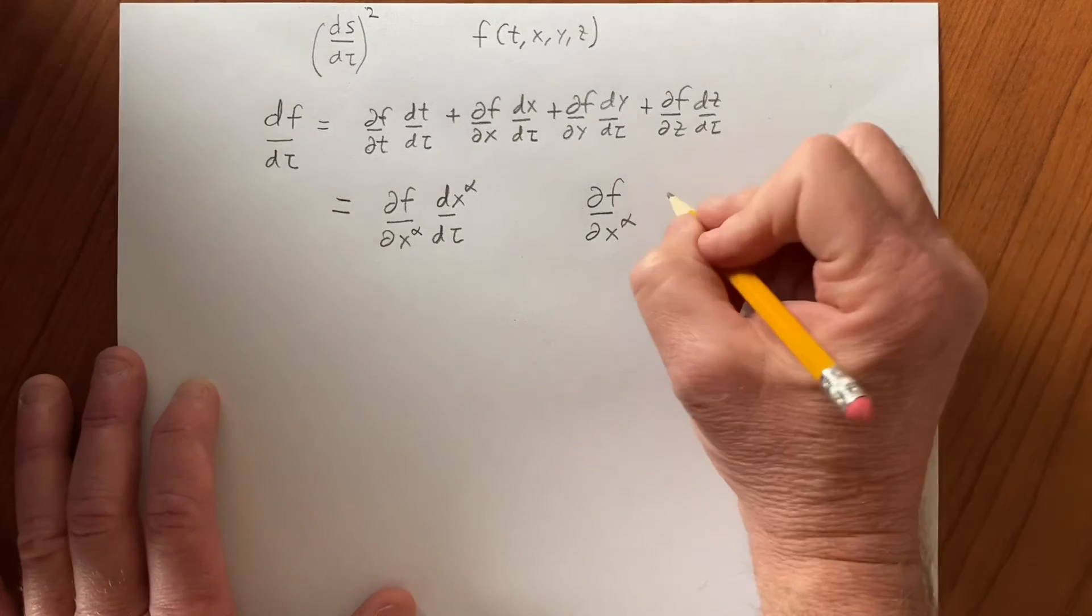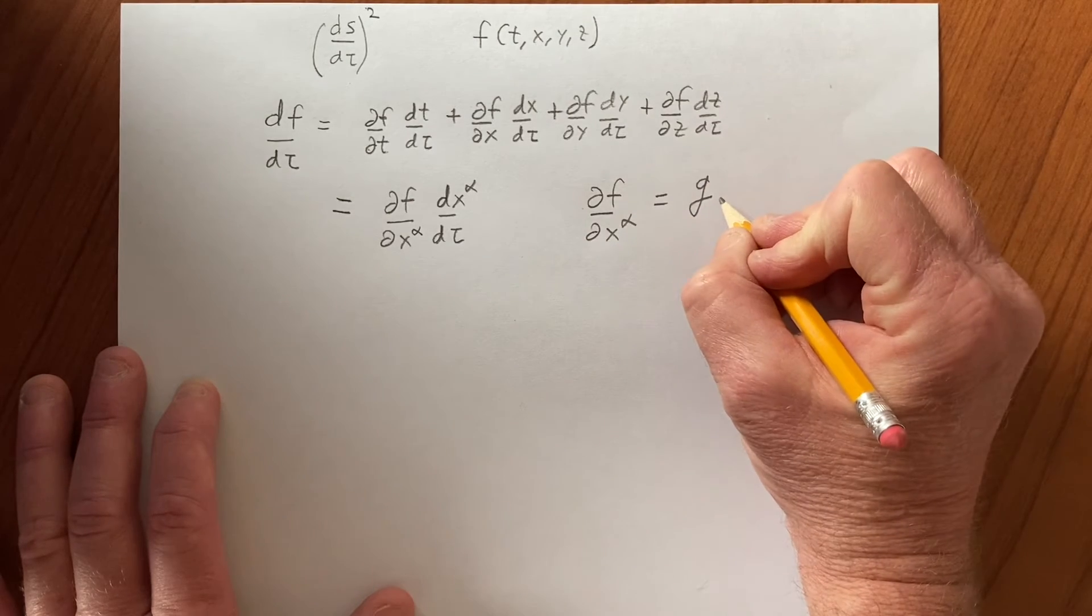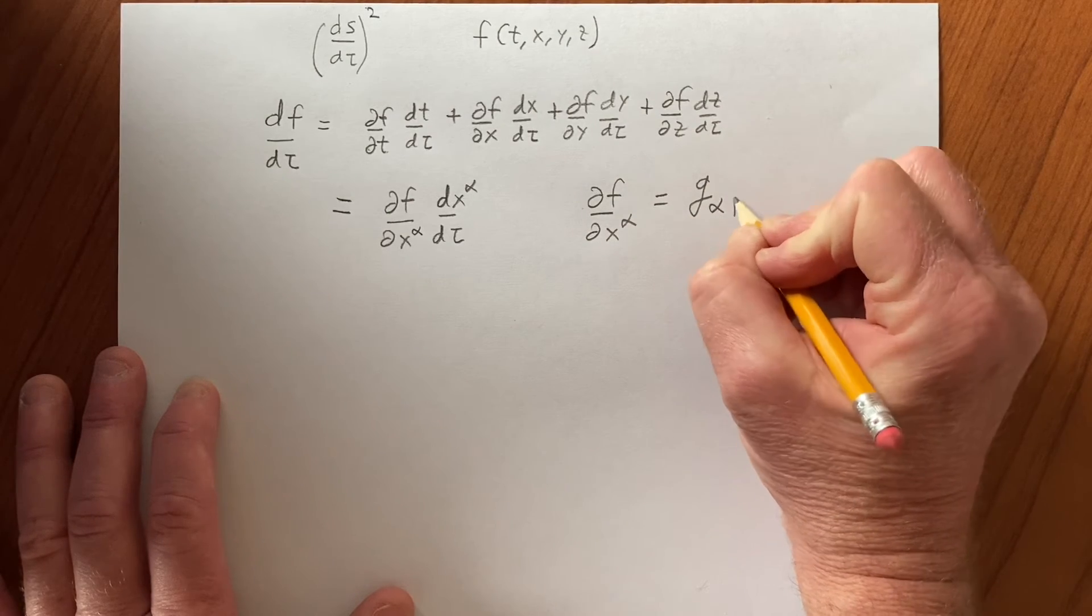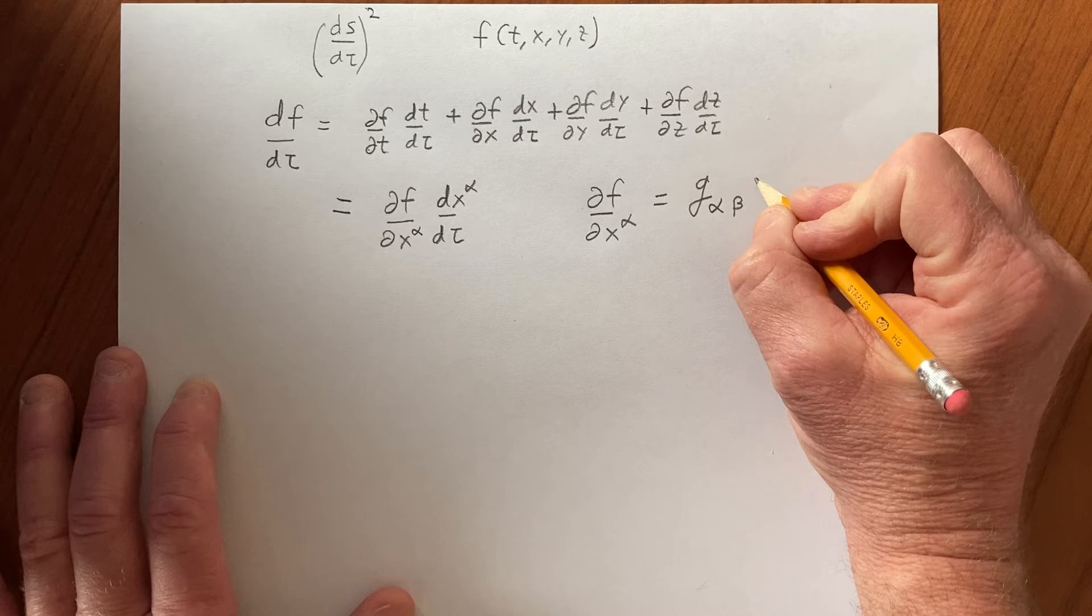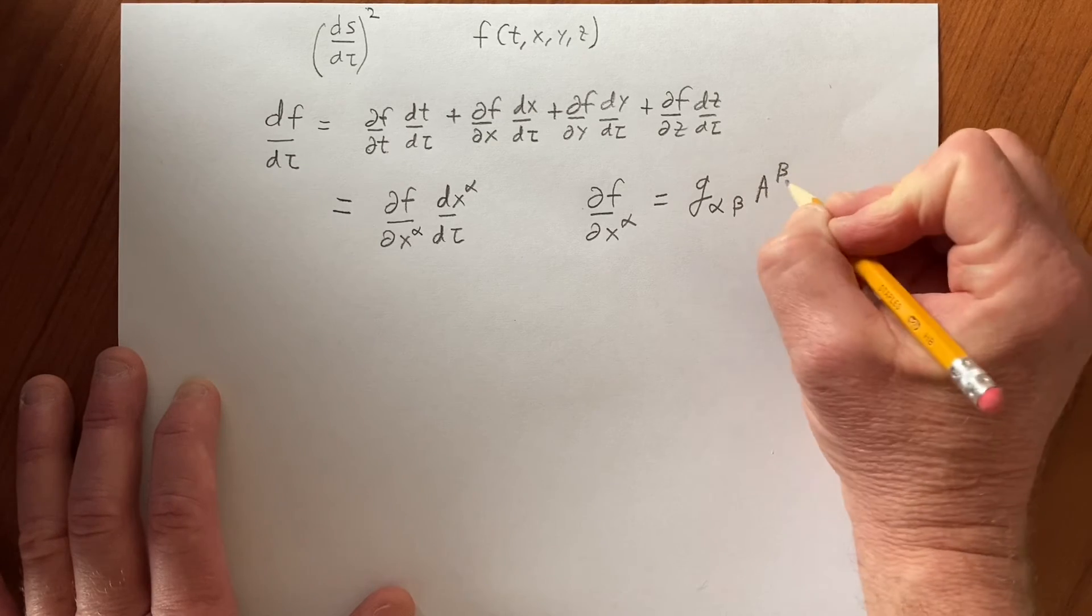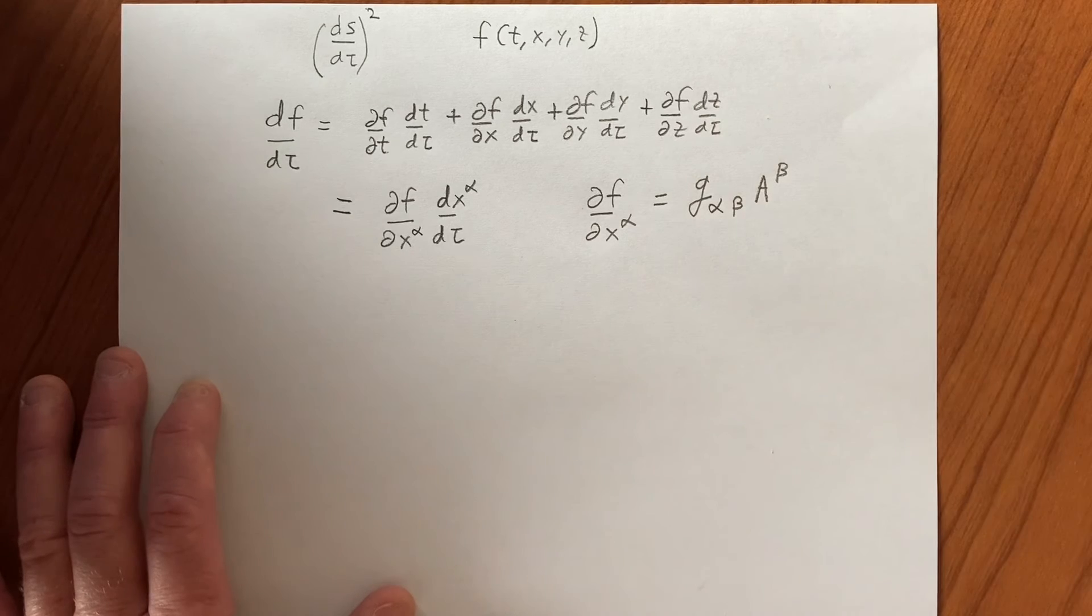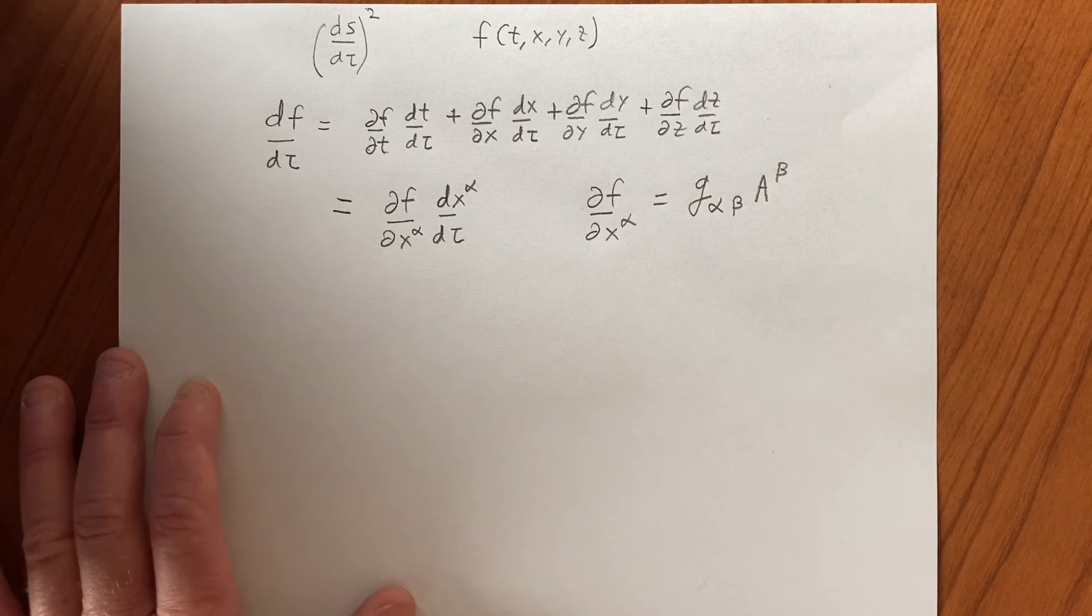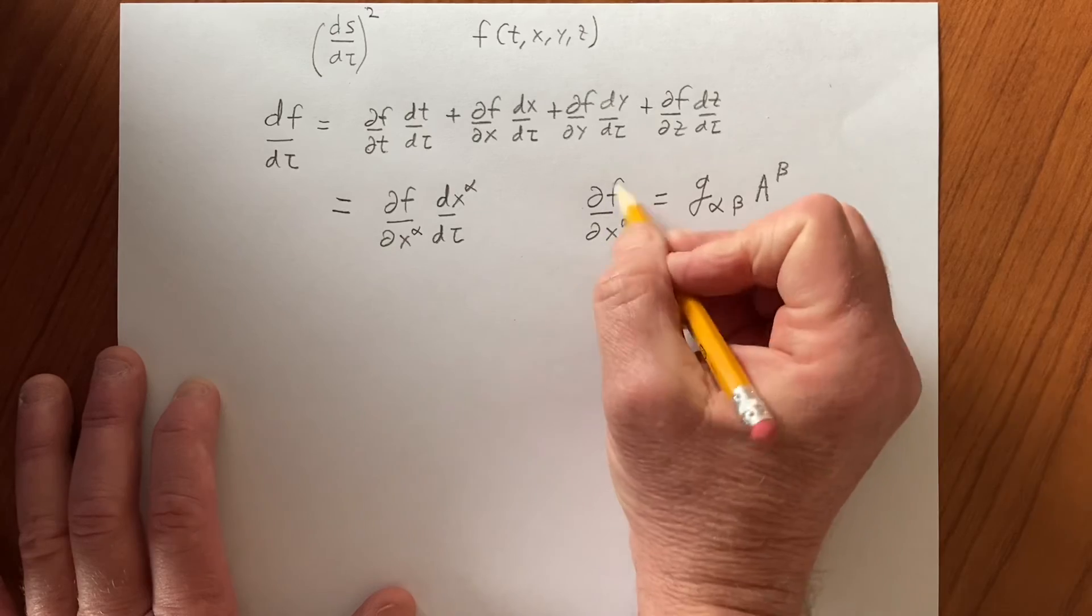...can be obtained from the metric from some object, let's call it A_β. So that's a vector, A_β, and from that vector we can get this kind of an object.